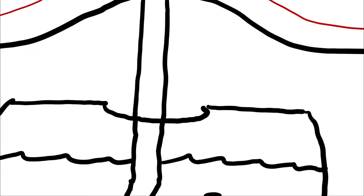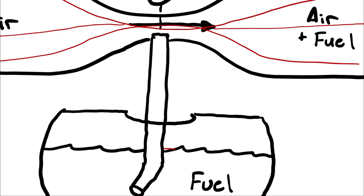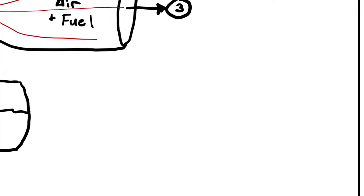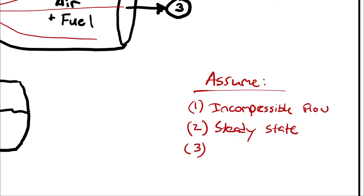Next, I'm going to assume that the height of fluid here is negligibly small — or rather, that the 10 centimeter length describes the distance required for the fluid to be pulled up. I'm also going to assume incompressible flow, steady state, and that this flow is ideal, meaning there are no losses due to friction.